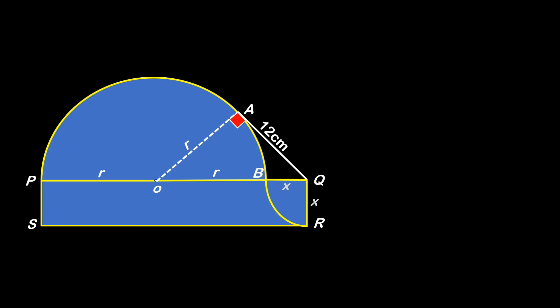This gives us a right triangle OAQ having hypotenuse OQ, which is actually the sum of r and x. Using Pythagorean theorem, we have OQ² = OA² + AQ².